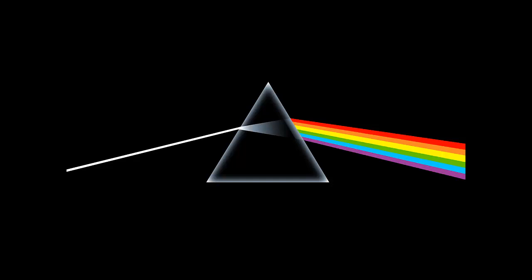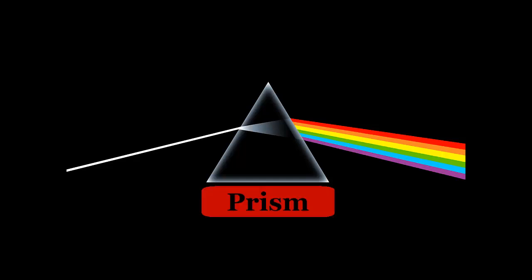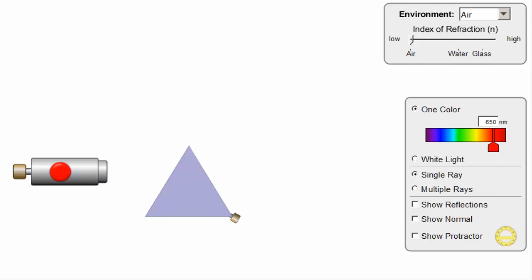Fans of rock music know this image pretty well - Pink Floyd's Dark Side of the Moon album cover, released in 1973. It shows white light passing through a prism. So the question we all have is: what's going on? If I shine a laser light through a prism, you can see some refraction happening.